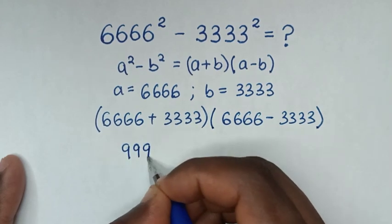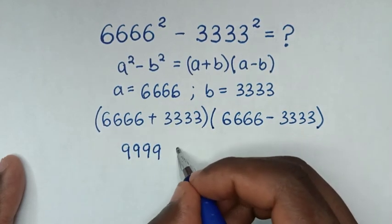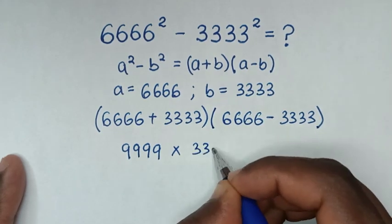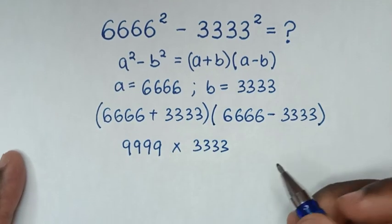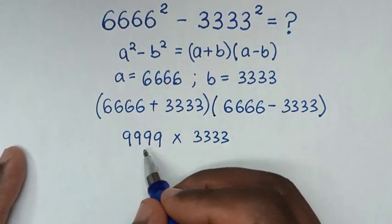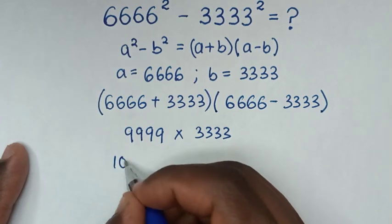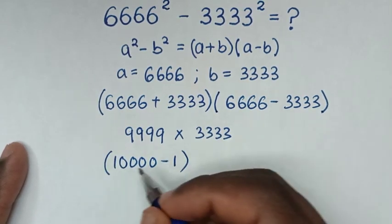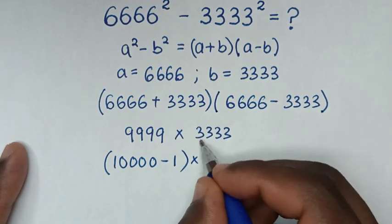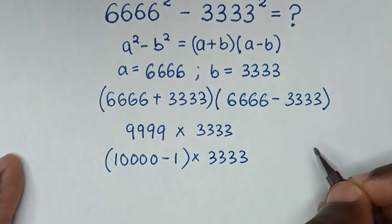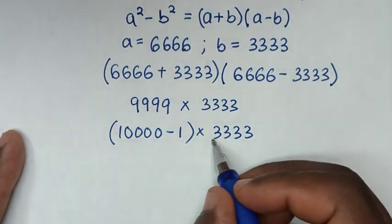This gives us 9,999 times 3,333. To easily multiply this, we can rewrite 9,999 as (10,000 minus 1), then multiply by 3,333.